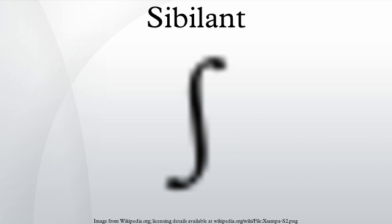The English sibilants are a more high-pitched subset of the stridents. The English stridents are /s, z, ʃ, ʒ, tʃ, dʒ/, and are stridents but not sibilants, because they are lower in pitch.